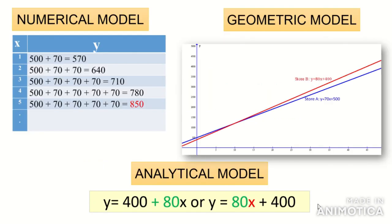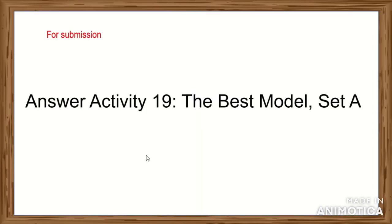Let's compare the three mathematical models. The numerical model — table of values — is most practical for smaller values of X, but time-consuming for larger values. The analytical model — equation — is more convenient for bigger values of X; we derive it from the table by looking at patterns. The geometric model is most convenient when we want to see trends, patterns, or comparisons between the behavior of two or more graphs, and it can be generated from the table of values or the equation. For submission, answer Activity 19: The Best Model, Set A.